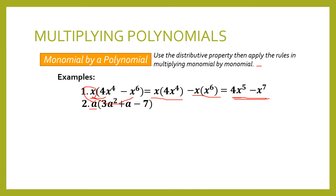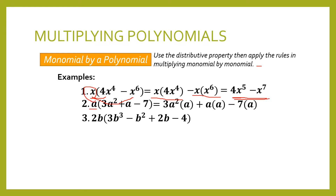For example number 2, we have a times a trinomial, which is 3a squared plus a minus 7. We distribute a to the terms. We will have a times 3a squared, plus a times a, minus 7 times a. And when we solve that, the result is 3a cubed plus a squared minus 7a.